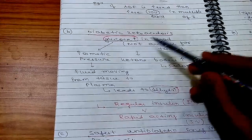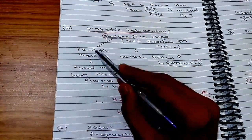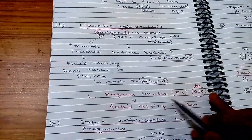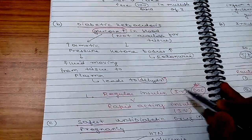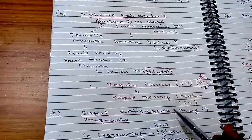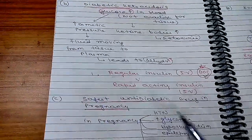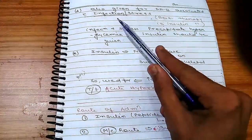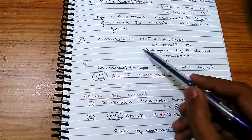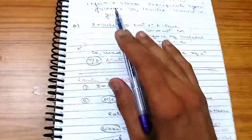Second indication: diabetic ketoacidosis (DKA) — increased blood glucose leads to increased ketone body formation and dehydration. Regular insulin via IV route is given in DKA, and is the drug of choice. Rapidly acting insulin can also be given via IV. Third indication: insulin is the safest antidiabetic drug in pregnancy. Fourth indication: DM2 complicated by infection or stress, which precipitates hyperglycemia. Fifth indication: acute hyperkalemia — insulin stimulates sodium-potassium ATPase, increasing potassium uptake into cells.